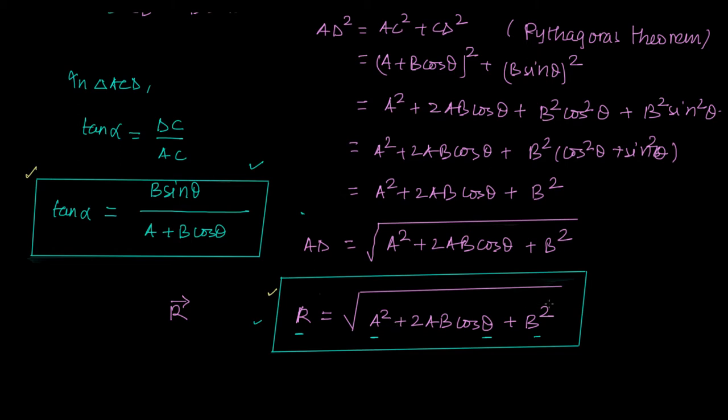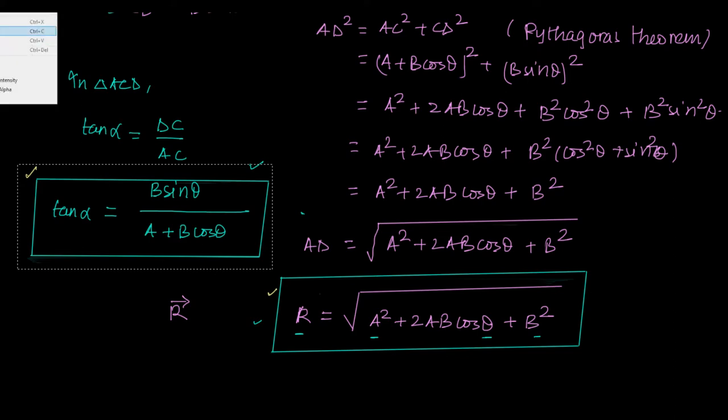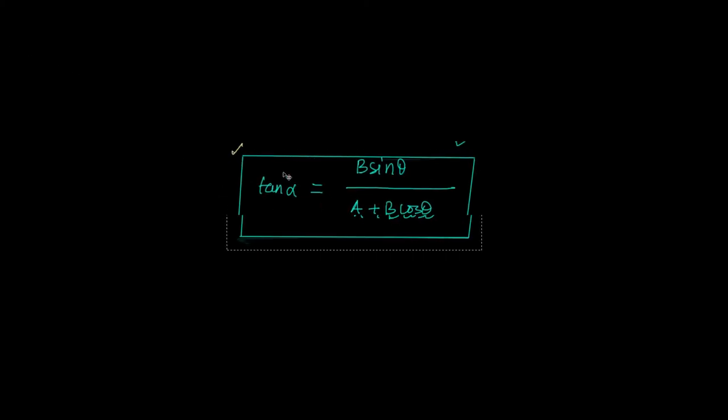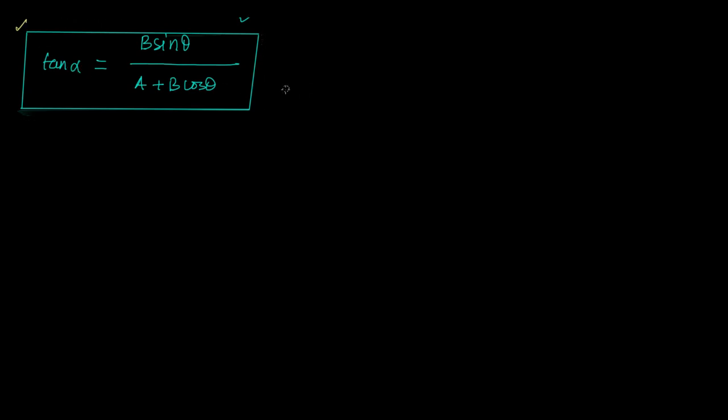Now there is an interesting case when A is equal to B. Let us try to understand. If A is equal to B, what happens here? What happens to the tan alpha? So let me copy this expression and bring it here. Then I write B also as A. Then what happens to tan alpha?